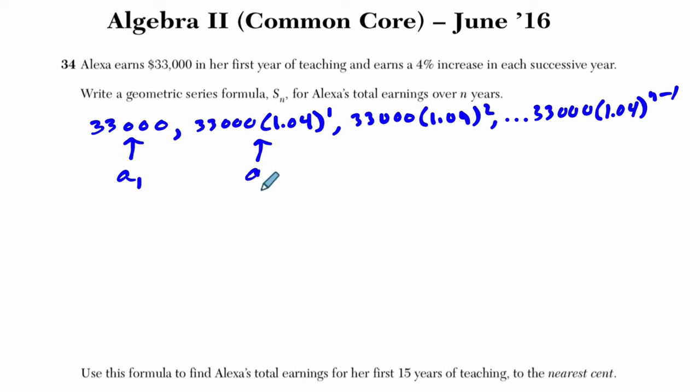Here, a_2 is not 1.04 to the second but to the first. It's always 1 less than that number there. This is a_3, so it's 33,000 times 1.04 squared, and then in general a_n will equal this. But they don't want a_n, they want S_n. They want the sum of all these terms up to some number. Now, there's a beautiful proof of this, but the idea is that you can quickly find the partial sum